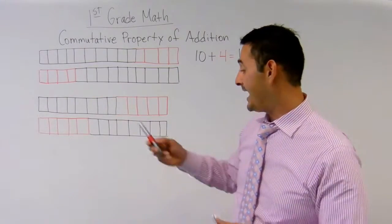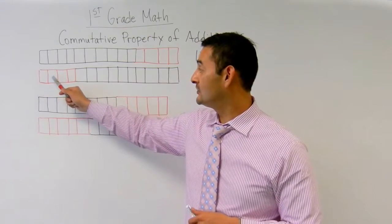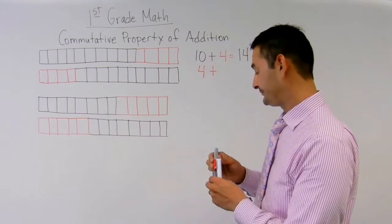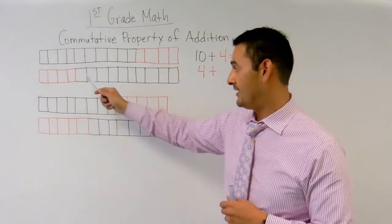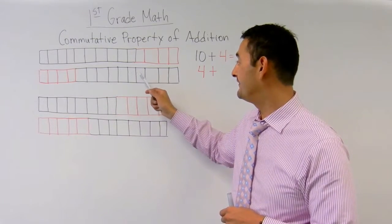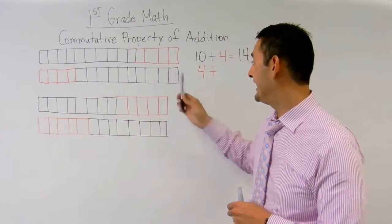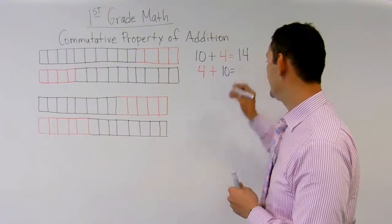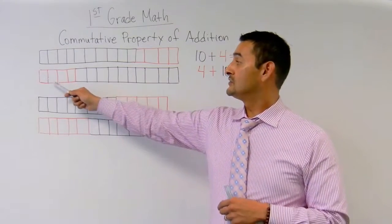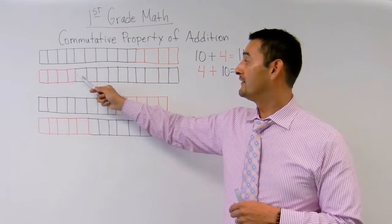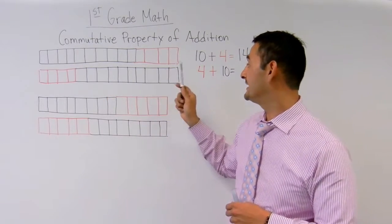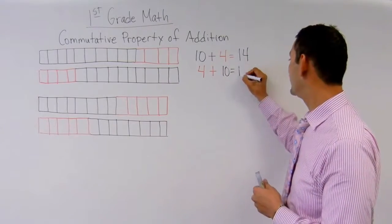So let's go back. How many red boxes do we have? One, two, three, four. So here I'm going to write four. Plus — how many black boxes do we have? Let's count: one, two, three, four, five, six, seven, eight, nine, ten. I've got ten boxes. Equals — how many boxes do I have in all? One through fourteen — I've got fourteen boxes.